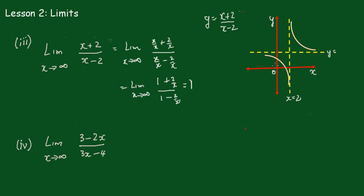You don't have to draw the graph, but I think the graph helps to understand what's happening. You can see here that the horizontal asymptote is y equals 1, so as x gets very very large, y approaches 1. And also when x becomes very very large in the negative direction, y also approaches 1 — a limit of 1.